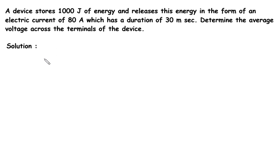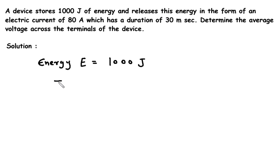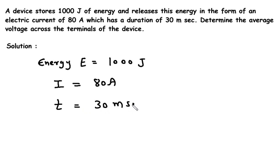In this question, the energy is given: energy E is equal to 1000 joules. The unit of energy is joules. Then electric current is given, denoted by capital I, it is 80 ampere. Time is given, denoted by small t, it is 30 ms, which is 30 multiplied by 10 to the power minus 3 seconds.